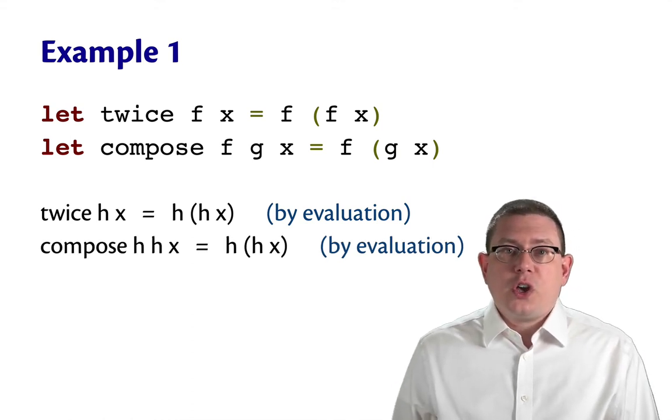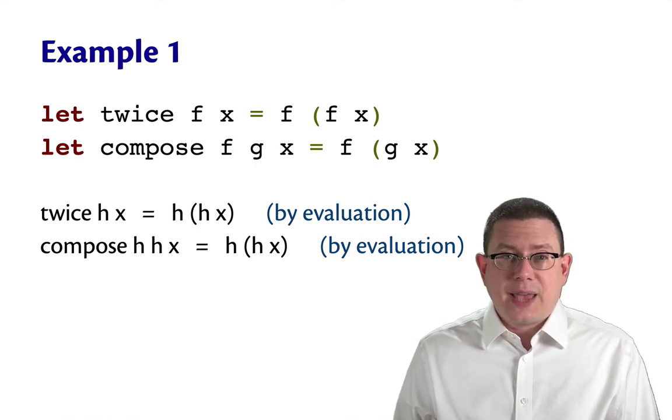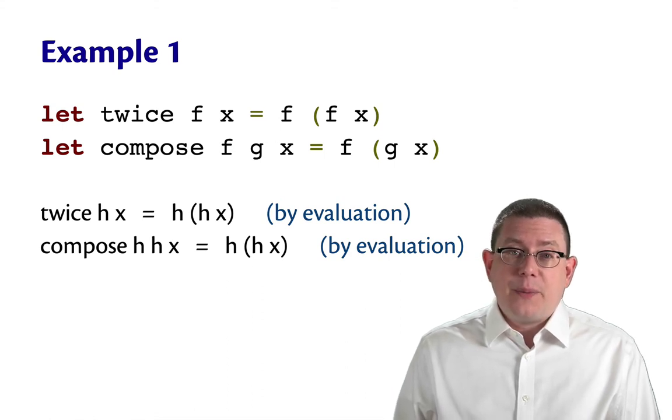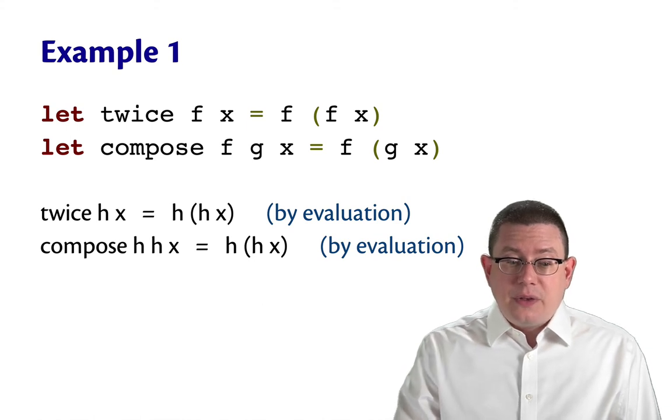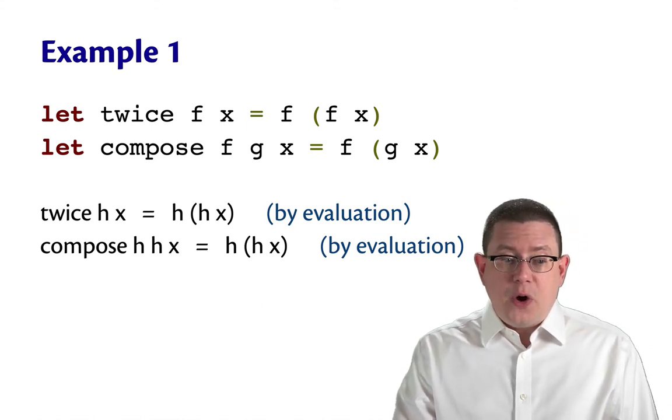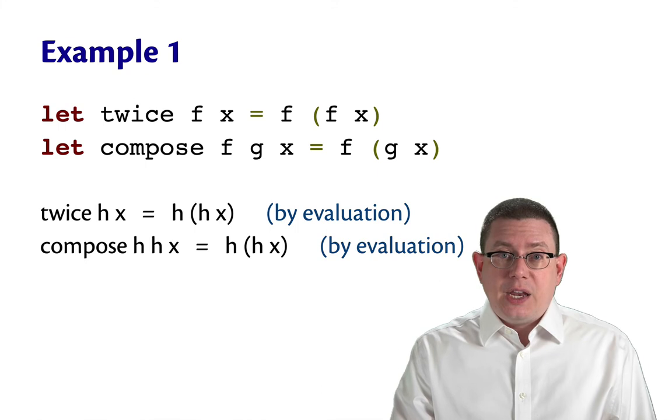Suppose you took compose and passed h in as both its first and second arguments, that is, as both f and g. Then that would evaluate to h applied to h applied to x. So both of these pieces of code involving twice and compose end up evaluating to the same intermediate expression.